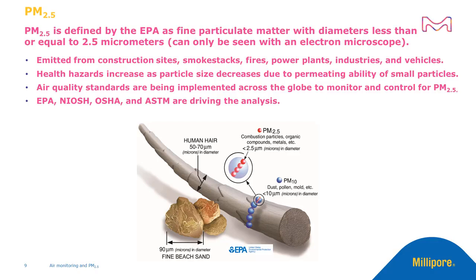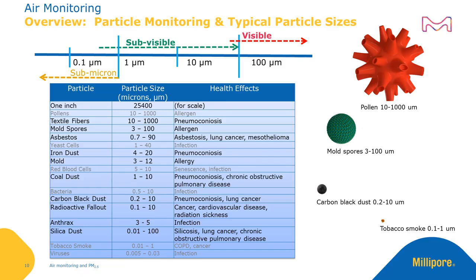New air quality standards are being implemented across the globe to monitor and control for PM2.5. By and large, the EPA, NIOSH, OSHA, and ASTM are driving this analysis. Here is an overview of a variety of particle sizes commonly monitored. Larger particles, such as pollen and some textile fibers, are visible to the naked eye. PM2.5 particles are sub-visible.